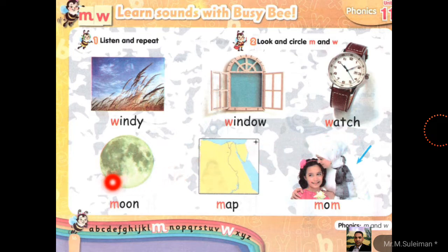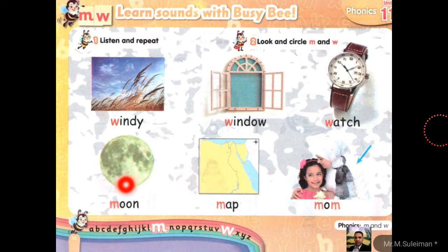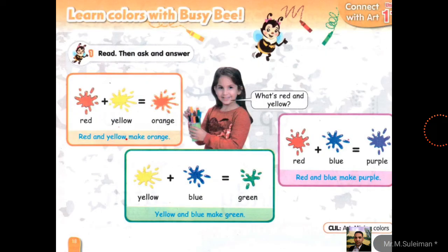Now with the letter M: moon, map, mom. After me: moon, map, mom. Excellent! You can read this page at your home with your mother or your father. Next: learn colors.